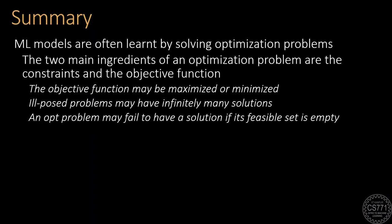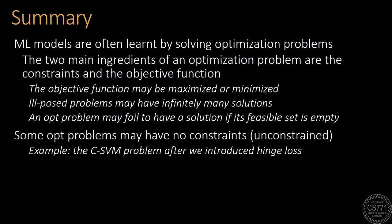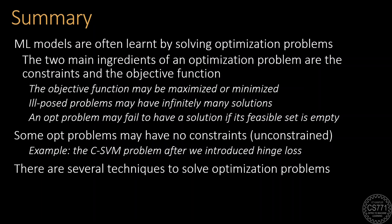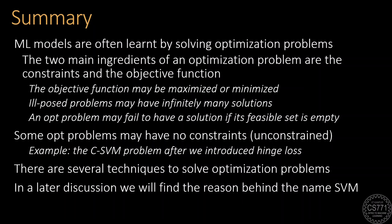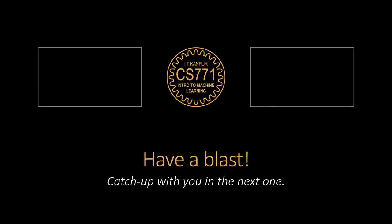So today, we learned that ML models are often learned by solving optimization problems, with two main ingredients: constraints and the objective function. Some optimization problems maximize their objective functions, while others minimize them. Ill-posed problems may have infinitely many solutions, and optimization problems may fail to have any solution if their feasible set is empty. Unconstrained optimization problems have no constraints — for example, the C-SVM with the hinge loss formulation. There are several techniques to solve optimization problems which we will explore in future discussions, along with why the SVM model has such a funny name. But that's a topic for another day. Have a blast and I'll catch up with you in the next one.